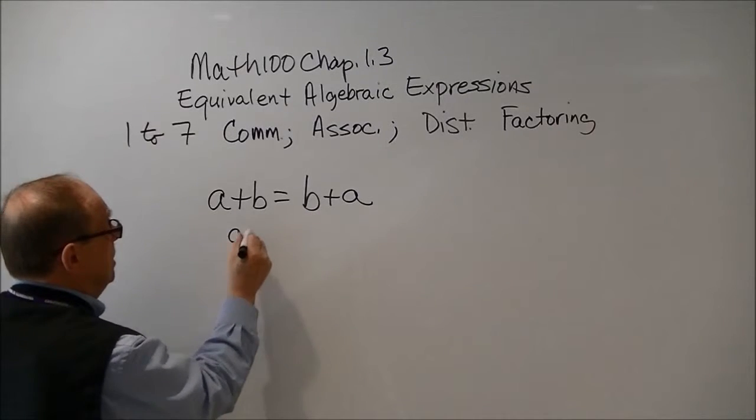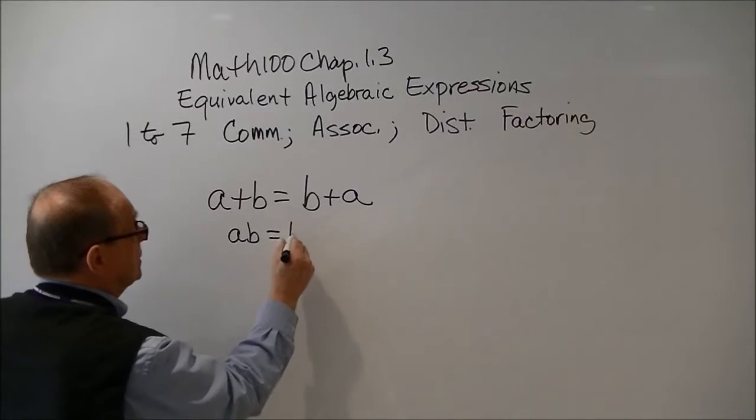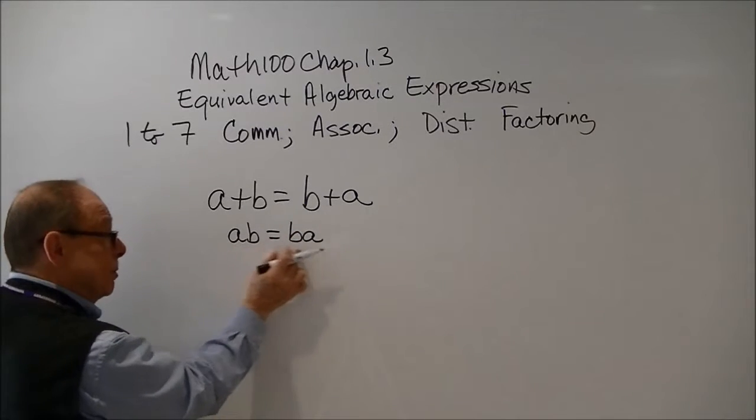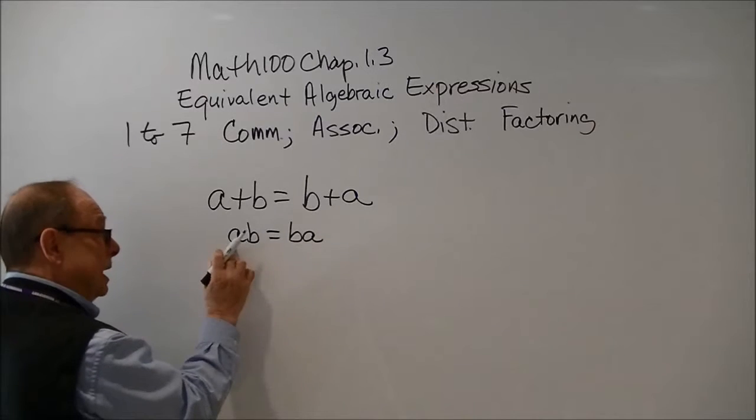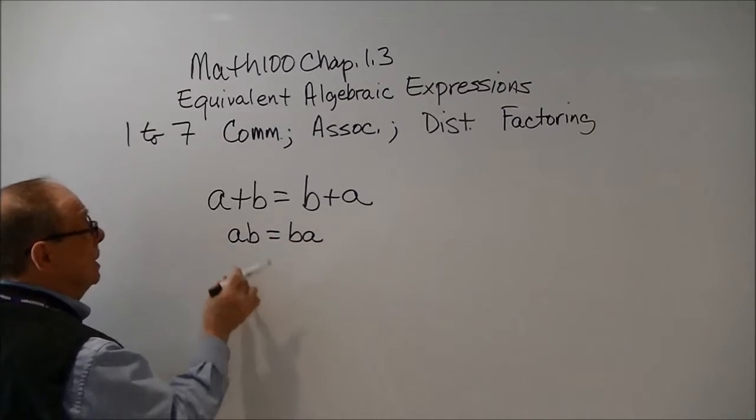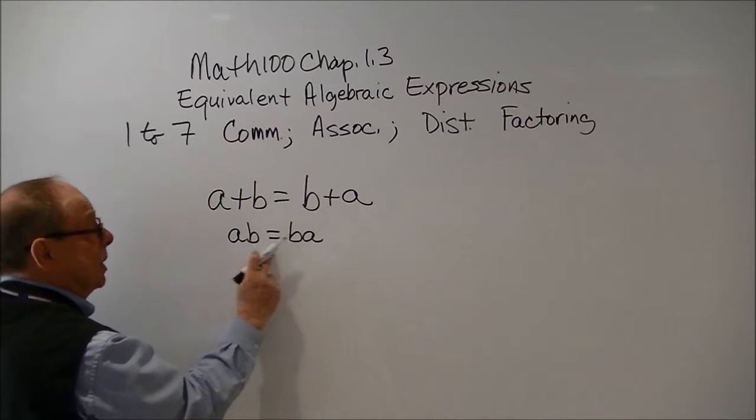Now, if you had ab equals ba, these are factors now, and this is multiplication, but again, the same factors just switched around. This is the commutative law of multiplication.